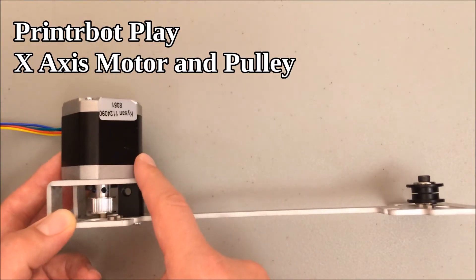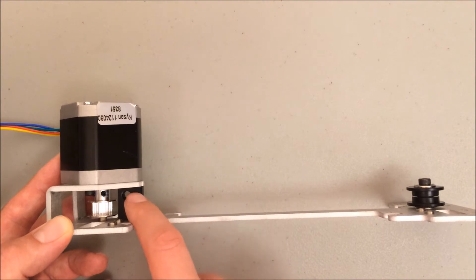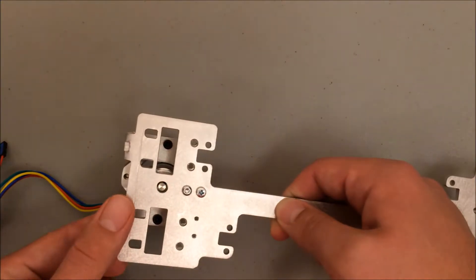Here you can see the finished x-axis motor along with this GT2 pulley, the Delrin Acme nut holding it in place, and over here you can see what it looks like from the top.